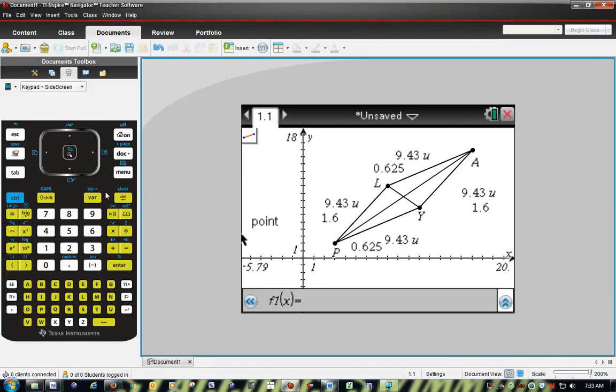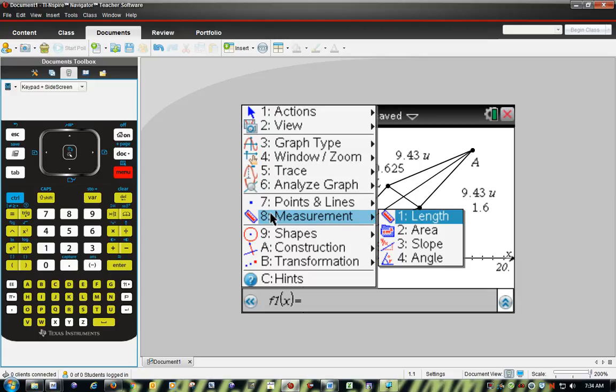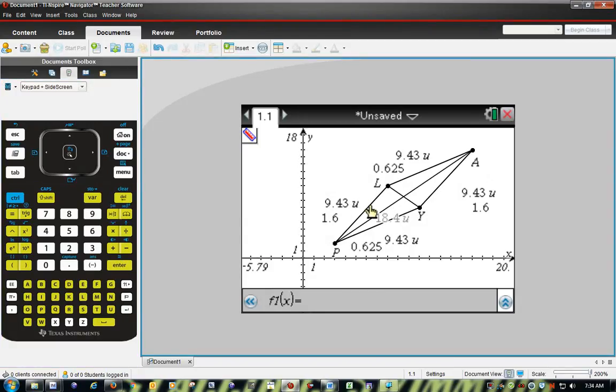Now we want to find lengths and slopes. So in order to find a length, we're going to do a measurement. You might have to go into geometry to find it. But measurement length is what we're going to use. There's the length of PA. I'm going to put that over here. 18.4. For LY, I'm going to put that over here, is 4.24.